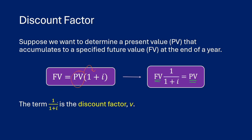This one over one plus i is referred to as the discount factor, and you sometimes see it written as v. So you might see this as: future value times v equals present value.